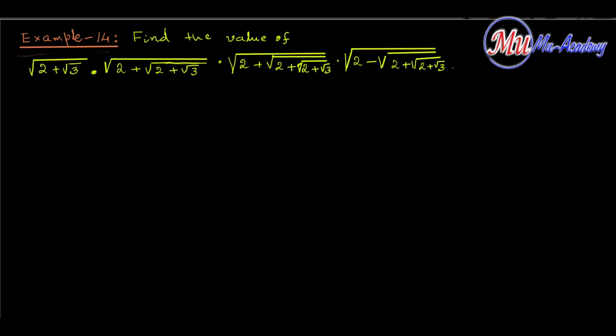Problem 14. Find the value of square root of (2 plus square root of (2 plus root 3)) into square root of (2 plus square root of (2 plus root 3)) into square root of (2 plus root 2 plus root 3), and similarly the other counterpart: square root of (2 minus square root of (2 plus square root of (2 plus square root of 3))).